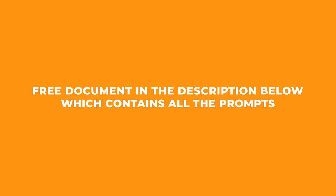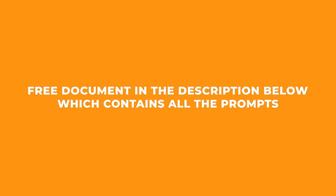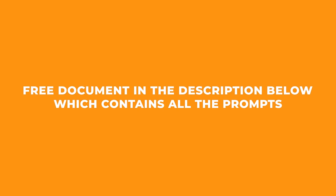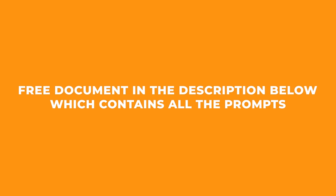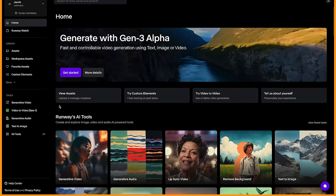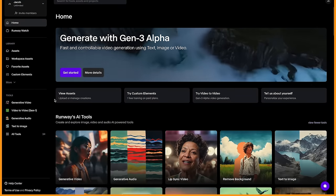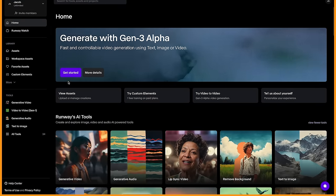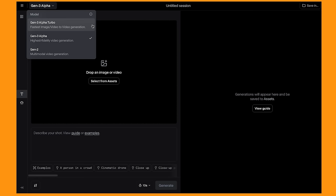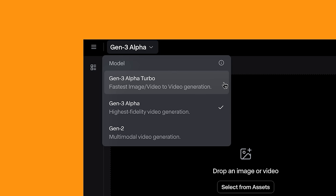I've also left a free document down below containing all the different style prompts I've used for this video, so feel free to check that out. To get started, let's jump on the website and click on the get started button. They have added the video-to-video feature in the Gen 3 Alpha Turbo as well now, and it's cheaper to use.